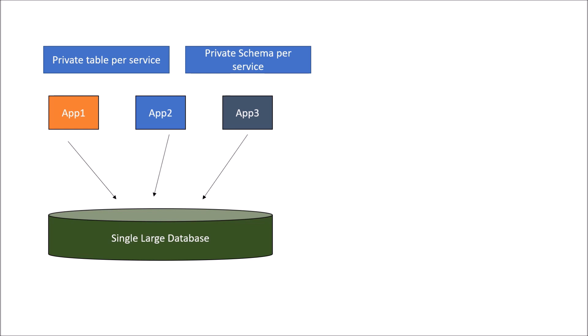The very first concern is tight coupling between multiple services and the single large database. Suppose application 2 starts growing, getting more traffic and needs to scale up. As application 2 is independent of application 1 and application 3, I can scale it up easily. But with data stored in a single schema in a single large database, scaling and deployment would be a problem.